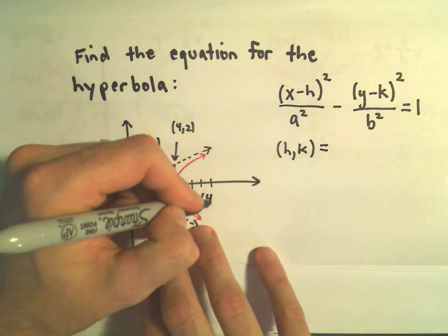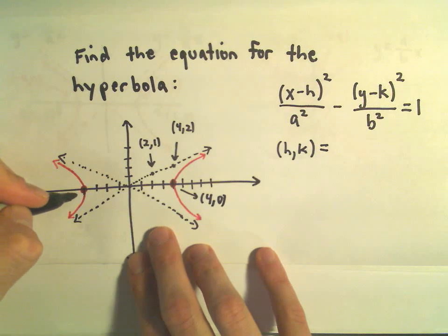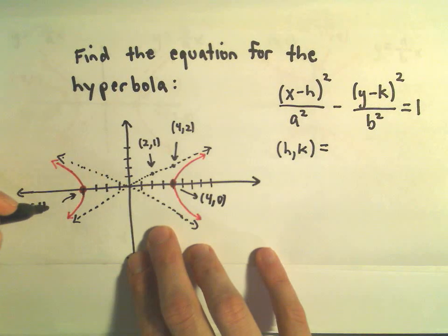It looks like one of our vertices will be at 4, 0, and the other one will be at negative 4, 0.